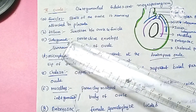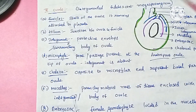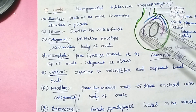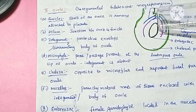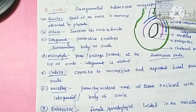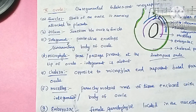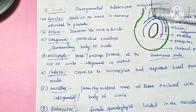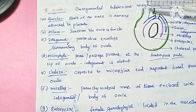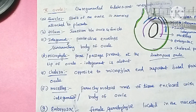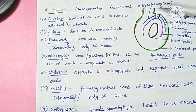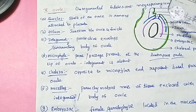The next part is the hilum. The hilum is the junction between the funicle and the ovule. So the junction of the ovule and funicle is called the hilum.